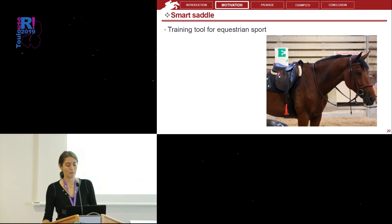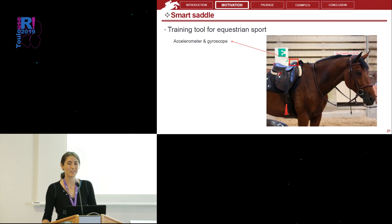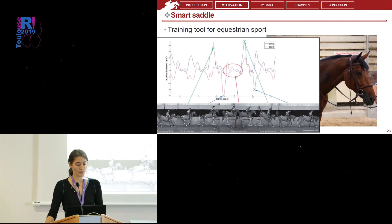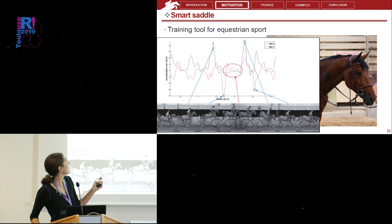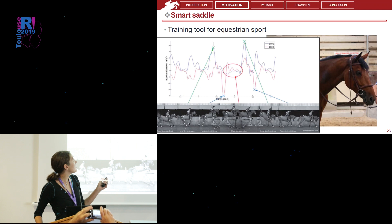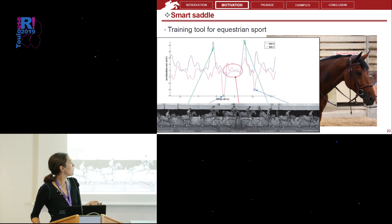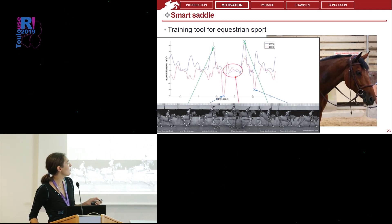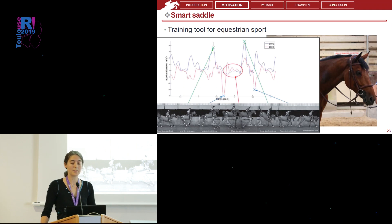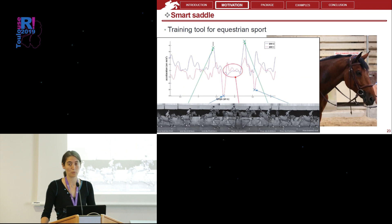That is why our company decided to provide a connected device giving locomotion parameters such as stride length, speed, and stride frequency. We developed a connected saddle composed of an accelerometer and gyroscope in the front to collect data in three spatial directions. At the back, there is a Bluetooth antenna that sends data to the rider's smartphone. We collect signals where the blue channel is acceleration in the z-direction and the red is acceleration in the x-direction. With this kind of signal we can detect the different phases of the jump. We also tried to estimate speed by integration of acceleration, but the accuracy was not satisfying, so we decided to develop mathematical models to predict speed.